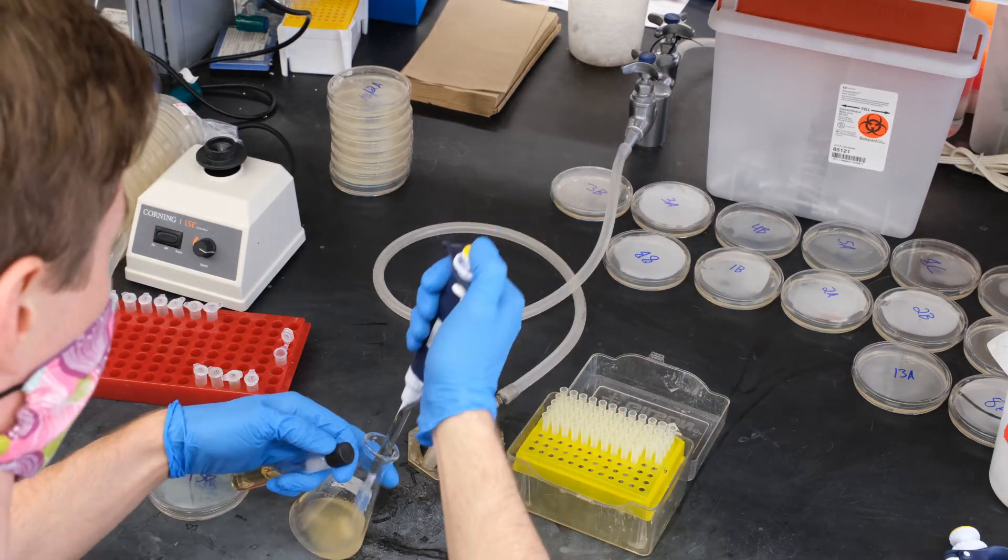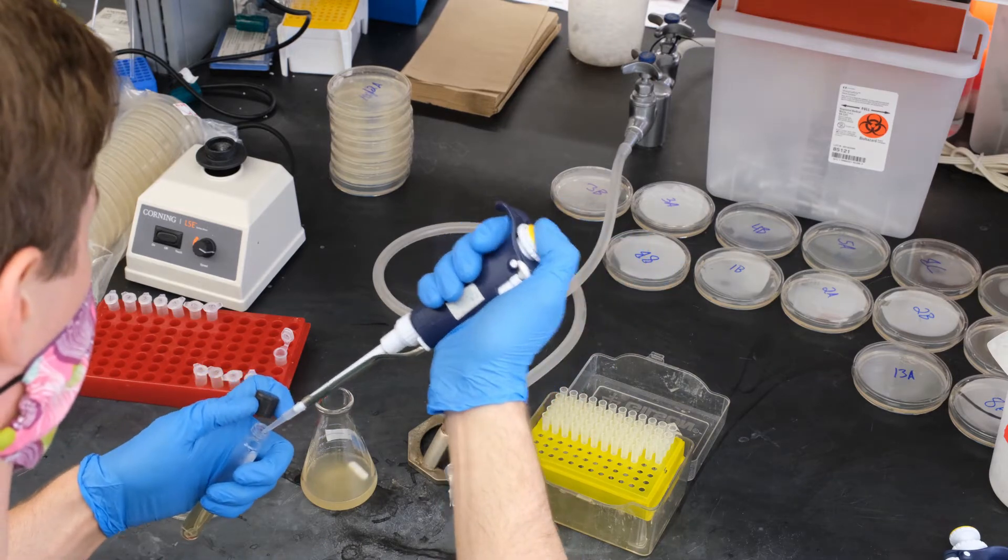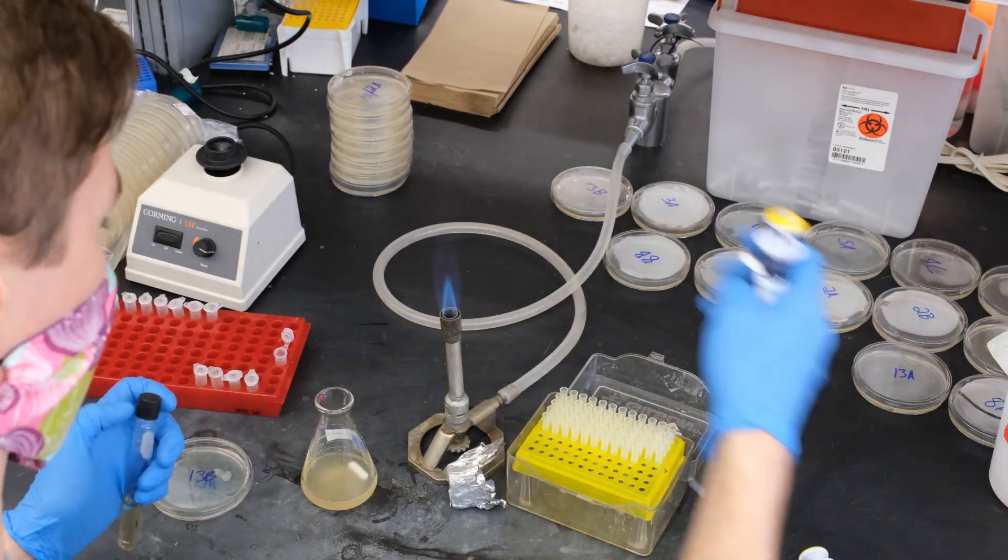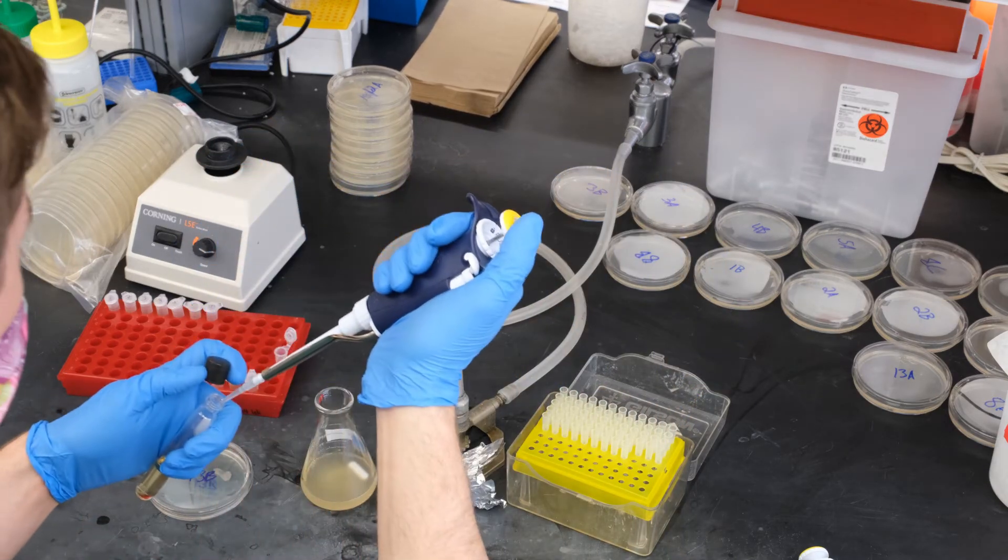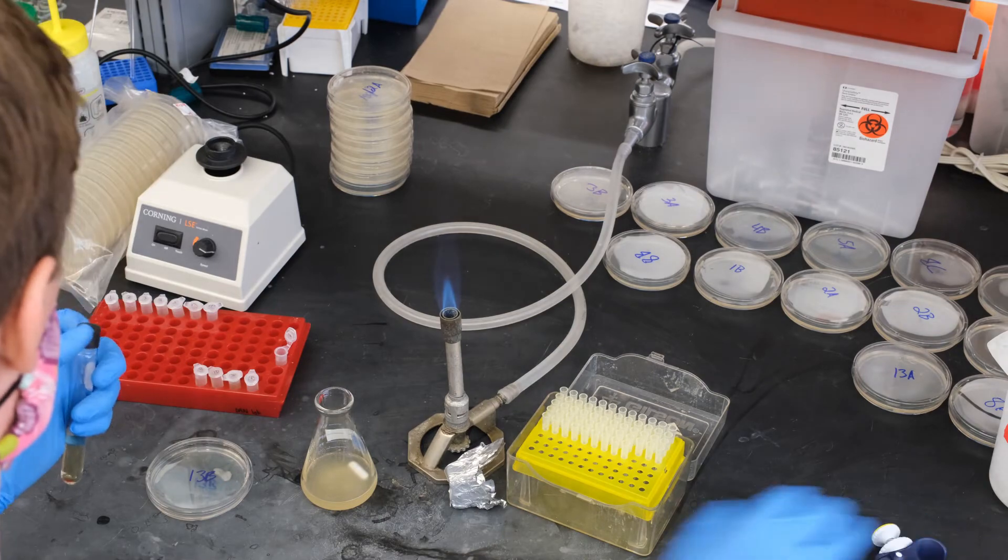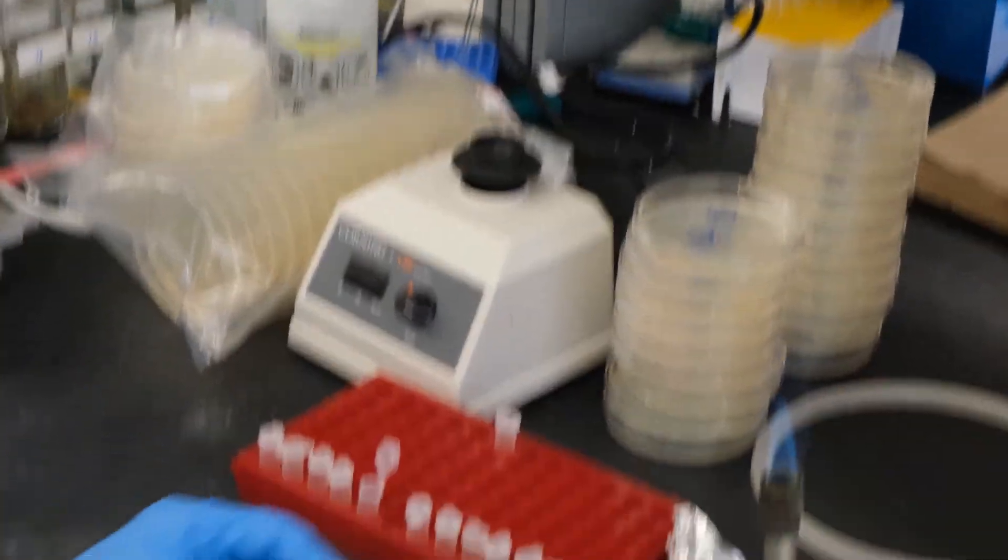When the plates and the molten auger all reach appropriate temperatures, grab your growing bacterial overnight culture. Add a small amount of fresh bacterial inoculum and a portion of your cleared phage extract to a tube of soft auger. Quickly vortex and then pour the tube over a hard auger plate.